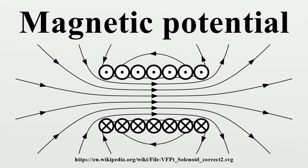The magnetic scalar potential psi is sometimes used to specify the magnetic H field in cases when there are no free currents, in a manner analogous to using the electric potential to determine the electric field in electrostatics. One important use of psi is to determine the magnetic field due to permanent magnets when their magnetization is known. With some care the scalar potential can be extended to include free currents as well.